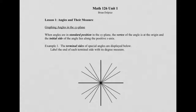When angles are in standard position in the xy-plane, the vertex of the angle is at the origin, and the initial side of the angle lies along the positive x-axis. So in standard position, the initial side lies along the positive x-axis, right along that green line. The terminal side of the angle then indicates what the actual angle is.